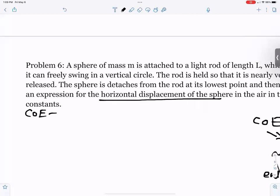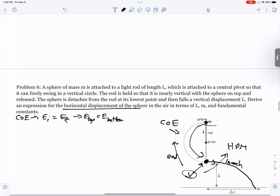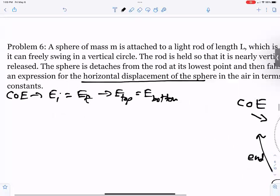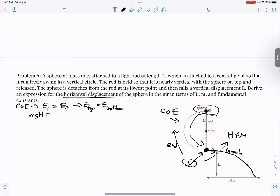Conservation of energy tells us that energy initial equals energy final, which would mean energy at the top, this point, would equal energy at the bottom. Well, the energy at the top is going to be potential energy, so that's going to be MGH. And that's going to be equal to the energy at the bottom, which would be kinetic energy, one half MV squared.